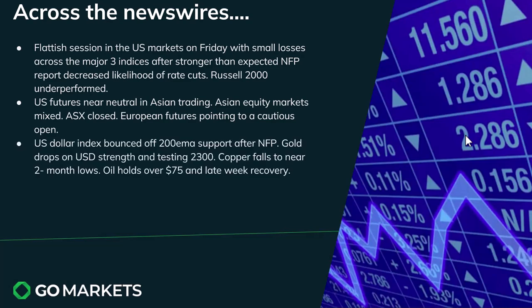The US dollar index had a good session on the back of that non-farm payrolls report, bouncing off the 200 EMA. Subsequently, commodities slipped — we saw gold drop on that USD strength, testing 2300 and sitting precariously beneath it, which is a really important psychological level. Copper also fell to nearly two-month lows. Oil was the exception to the commodity sell-off, holding over $75 on that late-week recovery. Bitcoin also paused around $70,000.